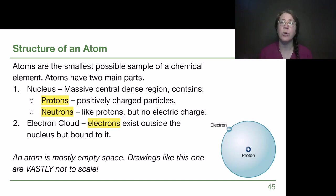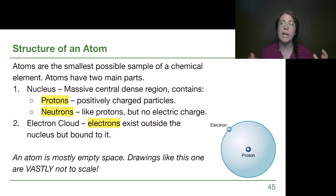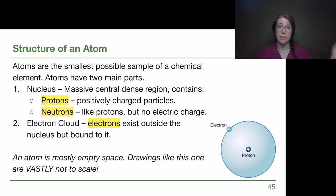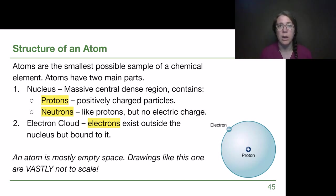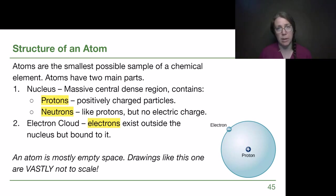The picture on the slide is nowhere close to being to scale, the same way that solar system pictures are not drawn to scale either. If we were to imagine an atom appropriately to scale, we'd have to think about like a football field or two across for the edges of the electron cloud, with a little tiny grape seed right in the middle — and that would be the nucleus. So mostly empty space.